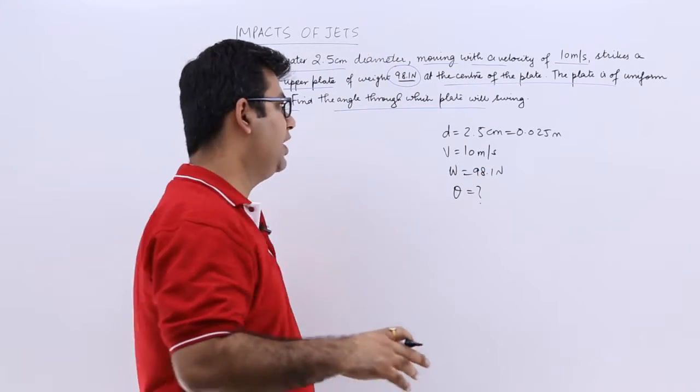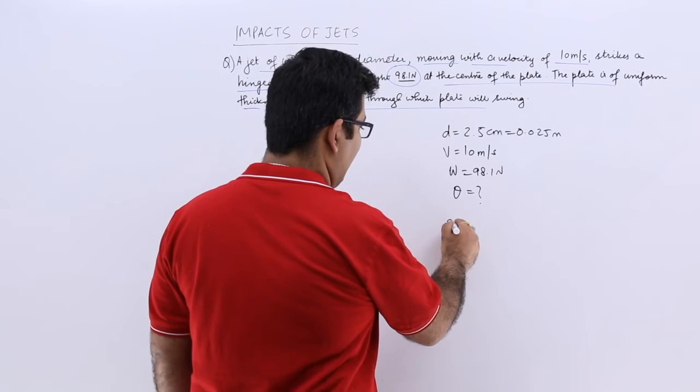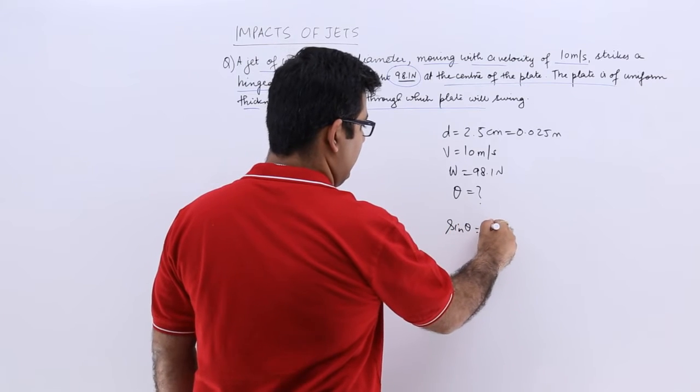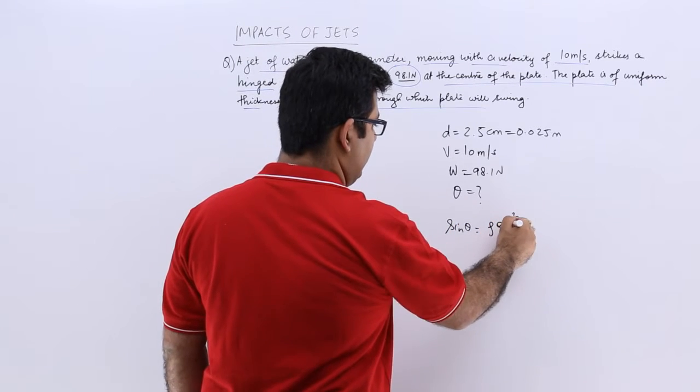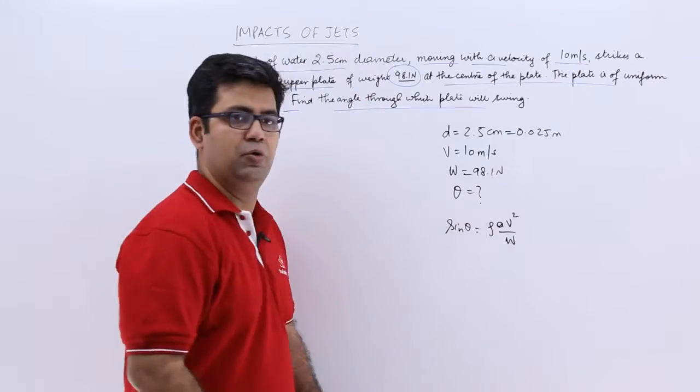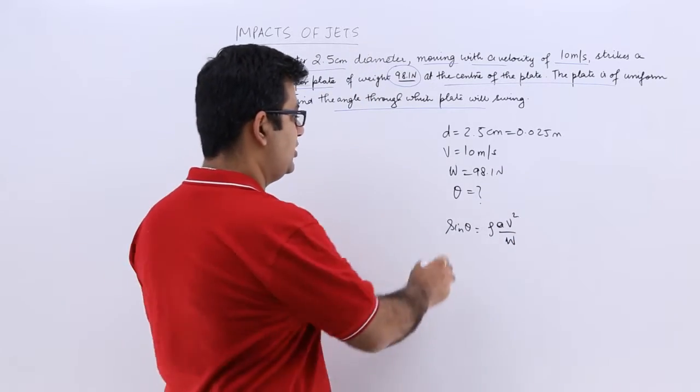If you remember the formula from the last video, sin theta equals rho into A into v squared upon W. So this is what you get.